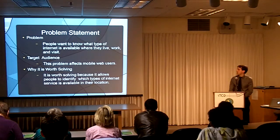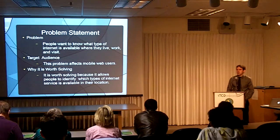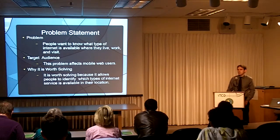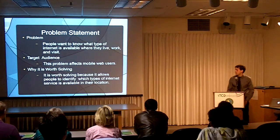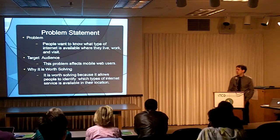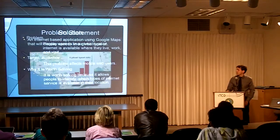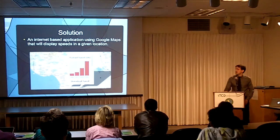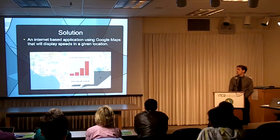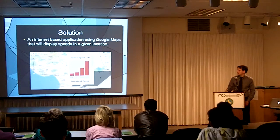So here's my problem statement. People want to know what type of internet is available where they live, where they work, where they visit — basically it affects anyone who uses the web on their cell phone. People want to identify what type of internet speed is available at a given location. So the solution is an internet-based application using Google Maps that will display the stats of a given location using the graph that's pictured here.